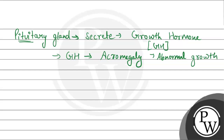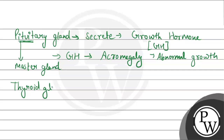The pituitary gland is called the master gland because it controls the functioning of all other glands in the body. One of these glands is the thyroid gland, which secretes a hormone known as thyroxine. Thyroxine hormone is secreted in two forms: T3 and T4, known as thyronin and thyroxine respectively.